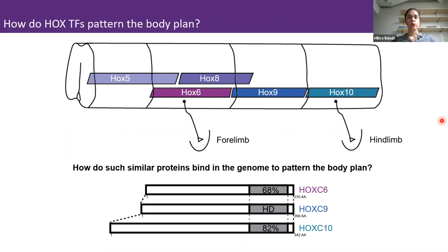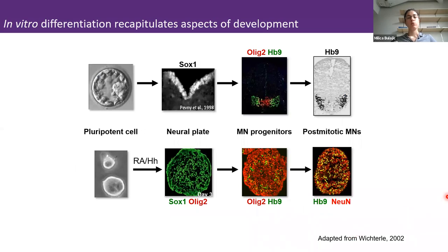The question we're trying to address is how do these proteins, which have highly similar DNA binding domains, bind in the genome, activate target gene expression, and control cell fate? To address this question requires homogeneous relevant cell populations at scales compatible with chromatin immunoprecipitation. For that reason, we turned to an in vitro differentiation strategy which recapitulates key aspects of development.